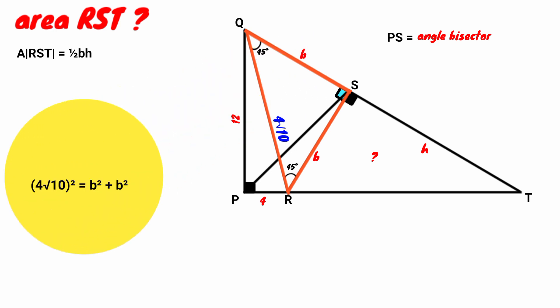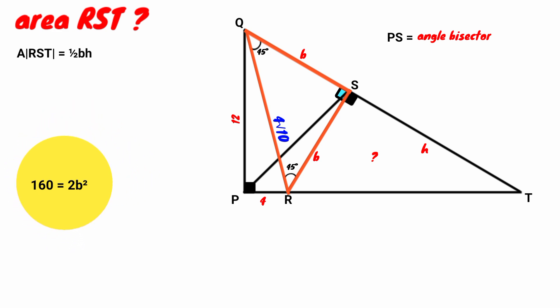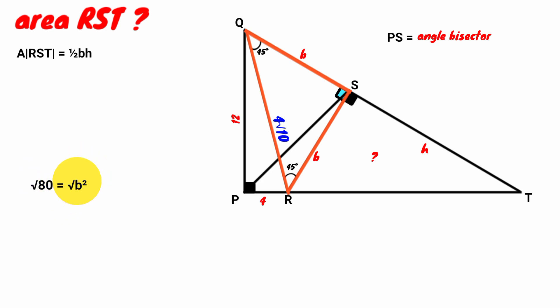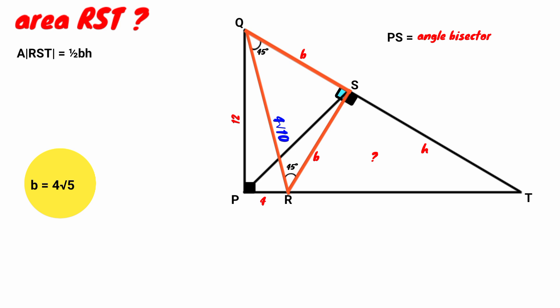So (4√10)² = B² + B². Now (4√10)² = 4√10 × 4√10 = 16 × 10 = 160, and B² + B² = 2B². So 160 = 2B², which gives B² = 80. Taking the square root: since 80 = 16 × 5, we get √(16 × 5) = 4√5. So B = 4√5. That is, the length of each of the two equal sides of triangle RST is 4√5.